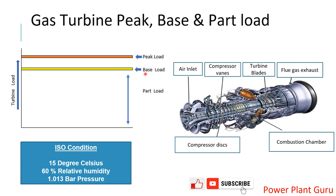At base load, where IGV is fully open, you will see on your gas turbine HMI that the machine status shows 'base load.' When you select peak load condition, the machine output increases — at least 8 to 9 percent of base load capacity — and the machine reaches peak load condition. At peak load, exhaust temperature is higher and airflow is limited, so only additional fuel is given, placing higher thermal stress on the machine. Return to base load as soon as possible. In this video we discussed base load, peak load, part load, and ISO conditions.